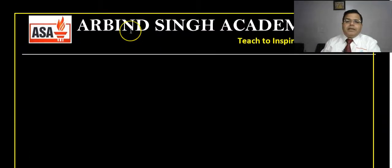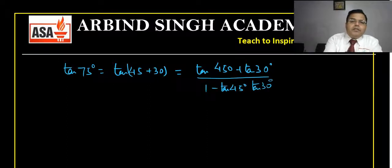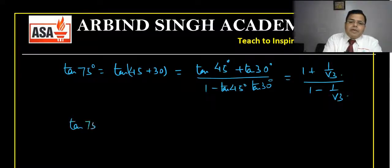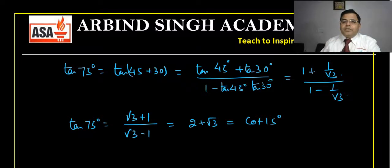Similarly, tan 75° is the reciprocal: root 3 plus 1 upon root 3 minus 1. We can calculate tan 75° as tan(45° + 30°). Working it out gives root 3 plus 1 upon root 3 minus 1, which when rationalized gives 2 plus root 3. So tan 75° equals 2 plus root 3, and note that tan 75° equals cot 15°.